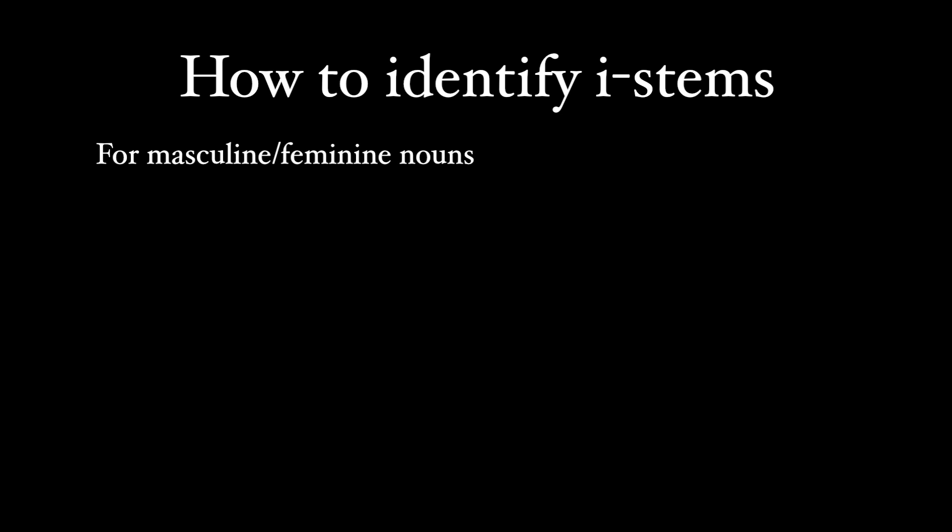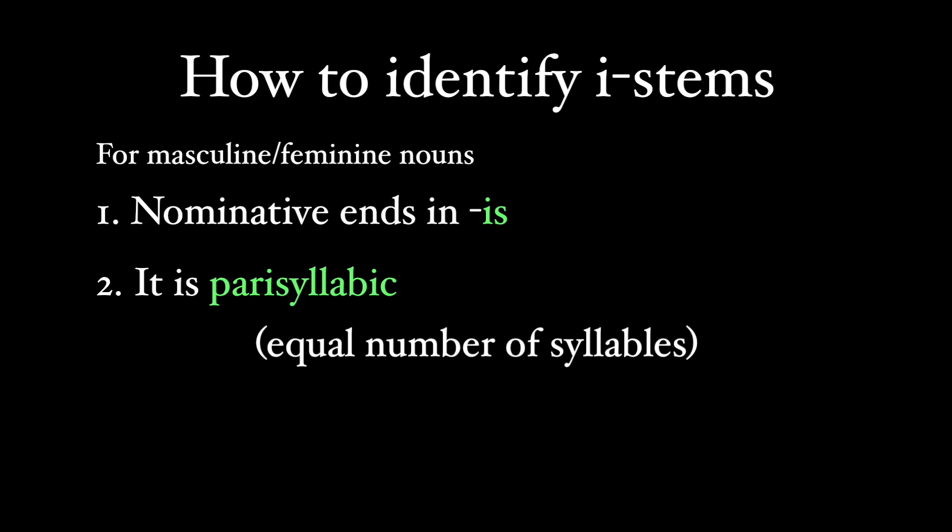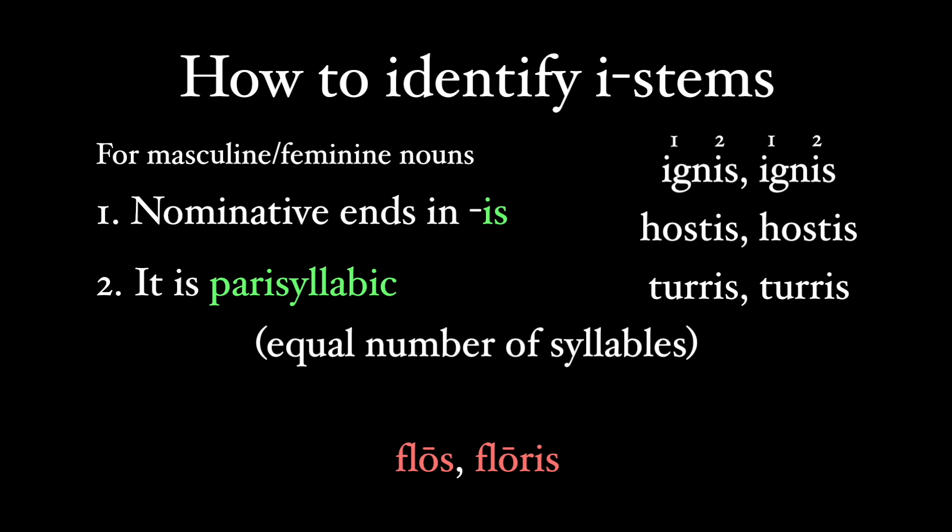For a masculine or feminine word, if the nominative ends in an is, and here's the key thing, the word is parisyllabic, meaning that there are equal number of syllables in the nominative and genitive singulars. So, here's a word, ignis, meaning fire, and its genitive is also ignis. This is masculine, and there are an equal number of syllables, two, in the nominative and genitive. So is hostis, which means enemy, and turris, which means tower. But flos is not, because it doesn't end in an is, and it isn't parisyllabic. Its genitive is two syllables, flouris.